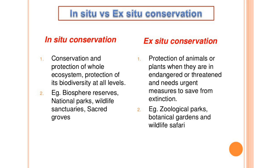In-situ conservation is the conservation and protection of biodiversity at all levels in its natural habitat. Examples include biosphere reserves, national parks, wildlife sanctuaries, and sacred groves.